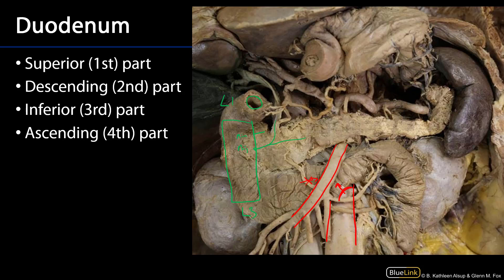The third part of the duodenum transitions into the shortest part — the ascending part. The ascending part is connected to the suspensory ligament of the duodenum, which is occluded here by the pancreas. That suspensory ligament, also known as the ligament of Treitz, is smooth muscle which supports the duodenojejunal flexure. As we move from the fourth part of the duodenum into the jejunum, we're moving from retroperitoneal to intraperitoneal.